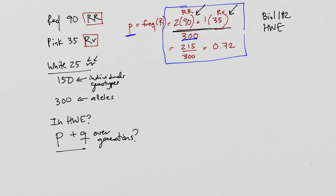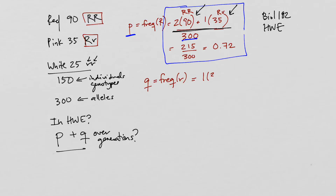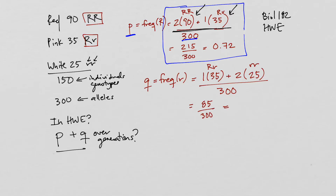Now we'll calculate Q, the frequency of the recessive allele, little r. Since we're not sure about Hardy-Weinberg equilibrium, we can't just take Q squared. Instead, we count the alleles: one times the heterozygotes (one copy of little r) plus two times the number of homozygous recessive individuals (two little r's), out of 300 total alleles. That simplifies to 85 out of 300, or 0.28 rounded.